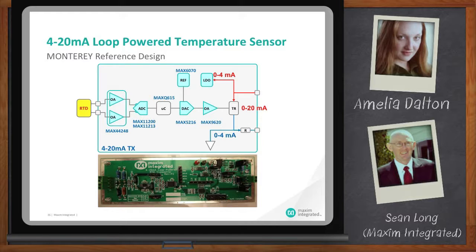Right. Yeah. So, for example, the Monterey reference design. This is a complete 420 milliamp loop-powered sensor. Connect a RTD sensor on one side, your 420 milliamp current loop on the other, and all of the components on here will allow you to measure temperature, do the linearization, the calibration, and then put it out onto the 420 milliamp loop.